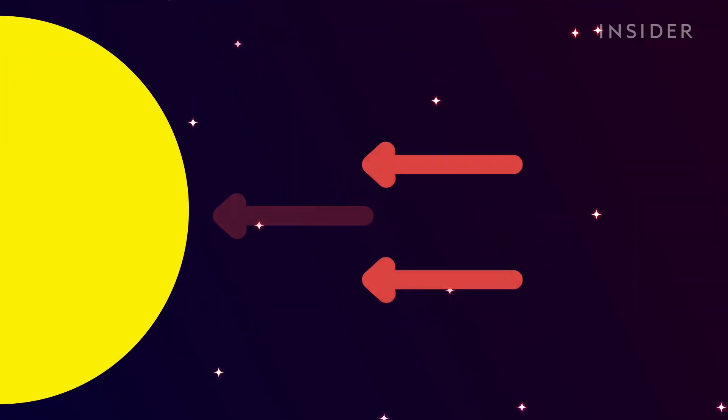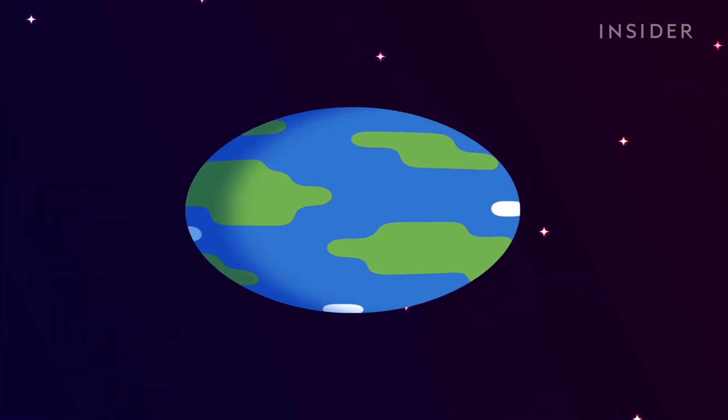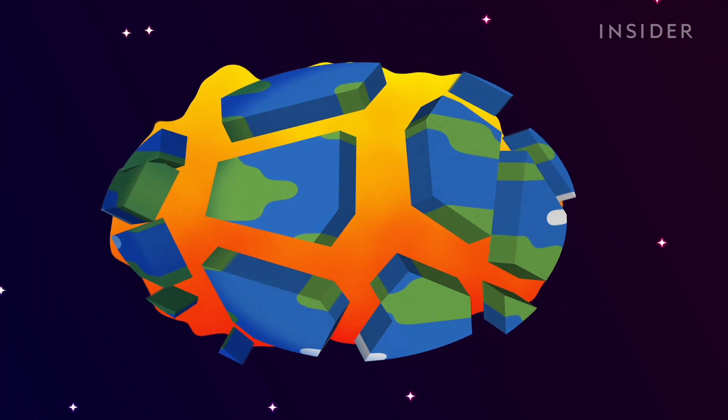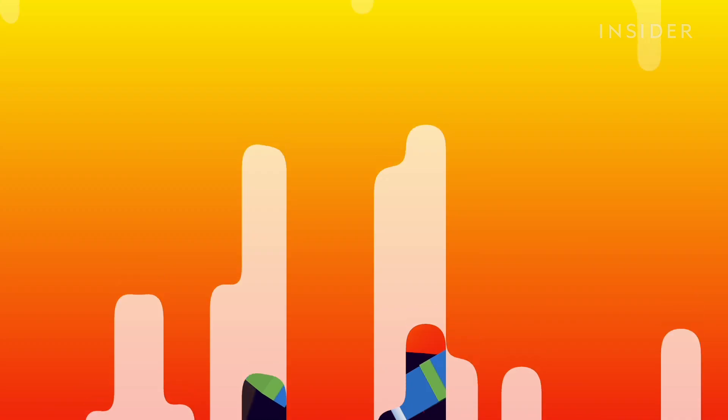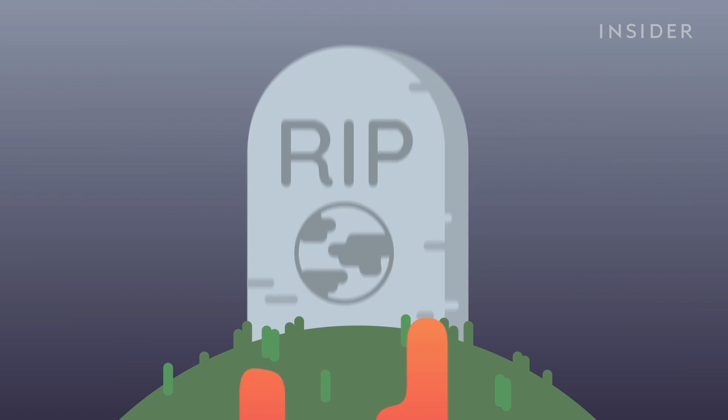By now, the sun's extreme gravity stretches the planet into an oval shape, and magma begins to leak through the crust. At about noon, Earth tears apart, bleeding liquid rock as temperatures hit 3,800 degrees. Our planet is no more.